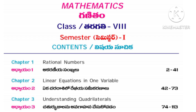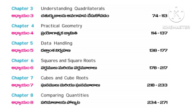In Semester 1, the chapters are: Number 1, Rational Numbers; Number 2, Linear Equations in One Variable; Number 3, Understanding Quadrilaterals; Number 4, Practical Geometry; Number 5, Data Handling; Number 6, Squares and Square Roots; Number 7, Cubes and Cube Roots; and Number 8, Comparing Quantities.